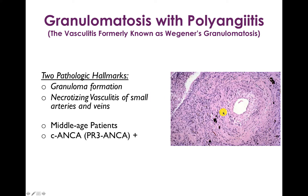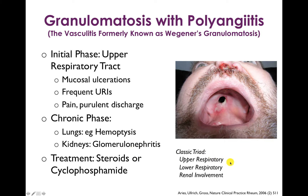Here we have a small artery showing vasculitis and neutrophil infiltration, with the beginning of a granuloma nearby. Granulomatosis with polyangiitis affects middle-aged patients and is associated with C-ANCA or PR3-ANCA positivity. There's a classic triad: involvement of the upper respiratory system, lower respiratory system, and renal involvement. If you see those three things in a patient, think about granulomatosis with polyangiitis.